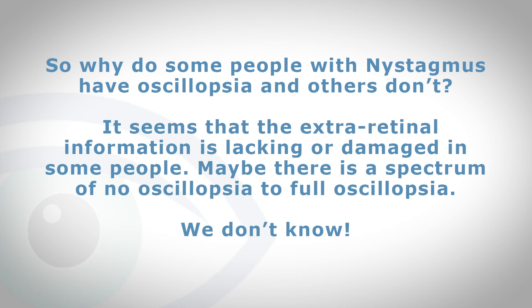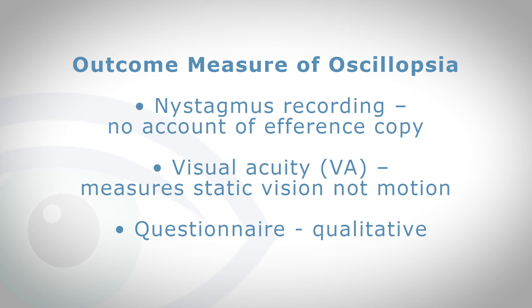If you look at all those studies, all of them recorded eye movements — but they only recorded the nystagmus. That doesn't tell you about the perception of oscillopsia; it doesn't measure the efference copy, for example. Other studies have looked at visual acuity, but visual acuity just tells you how well you can see a static image — it doesn't tell you about the effects of motion or the perception of motion itself. Some have used questionnaires to ask about oscillopsia, which is moving in the right direction, but of course it is very qualitative and doesn't really get to the nub of the matter.